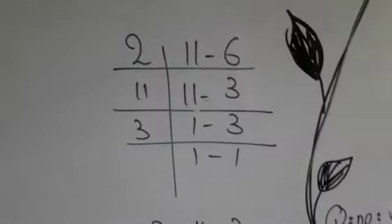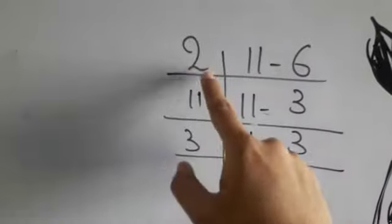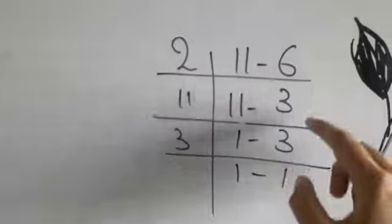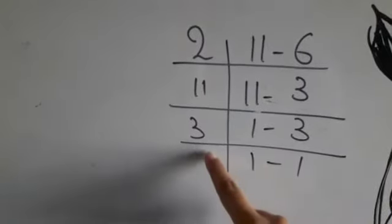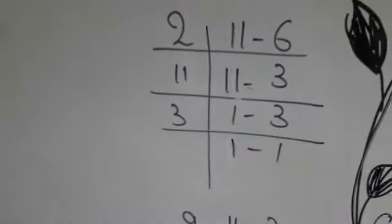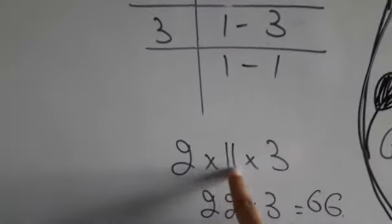The denominator is 11 and 6. In 2, 11 is not coming. 2 threes are 6. 11 ones are 11. 3 is not coming in 11 table. 3 ones are 3. So what is 2, 11, and 3? 2 multiply 11 multiply 3. 2 elevens are 22, 22 threes are 66. So our LCM is 66.